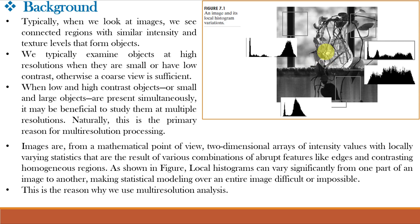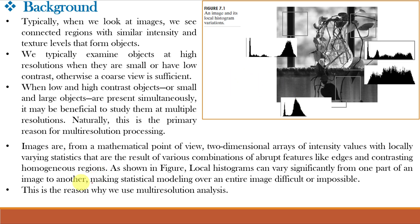Objects in images are connected regions of similar texture and intensity levels. We use high resolution to look at smaller objects and coarse resolution to look at large objects. But if we have both large and small objects, we use different resolutions to look at them. Images are 2D arrays of intensity values with locally varying statistics, and the local histogram can vary over different areas of an image. It is difficult to model statistical variation over the entire image, and this is the reason why we use multi-resolution analysis.